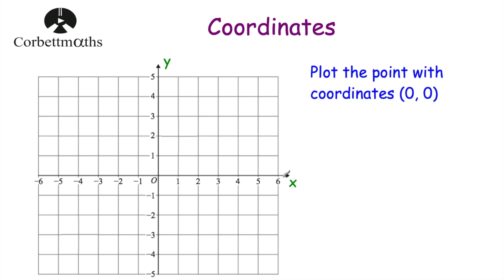Here's our first question. We've got our x-axis and y-axis, and we've been asked to plot the point with coordinates (0, 0). This is a very special point — it's 0 along the corridor and 0 up the stairs. So it's right here, at this point. And I'll mark it with a little O, because that O stands for the origin.